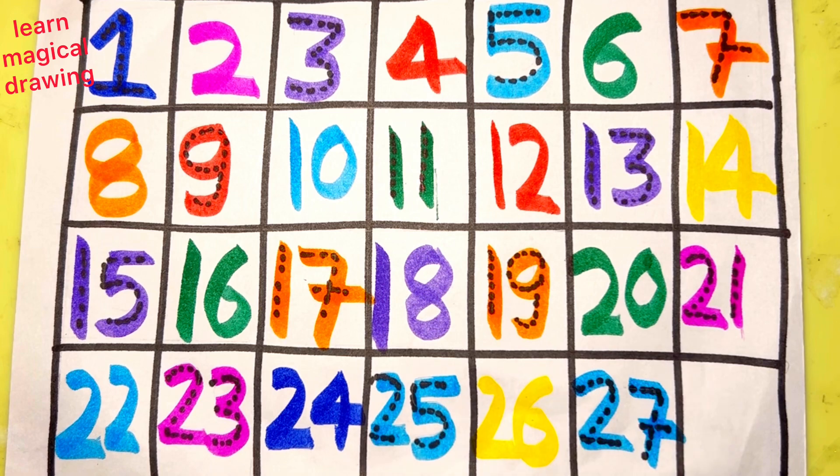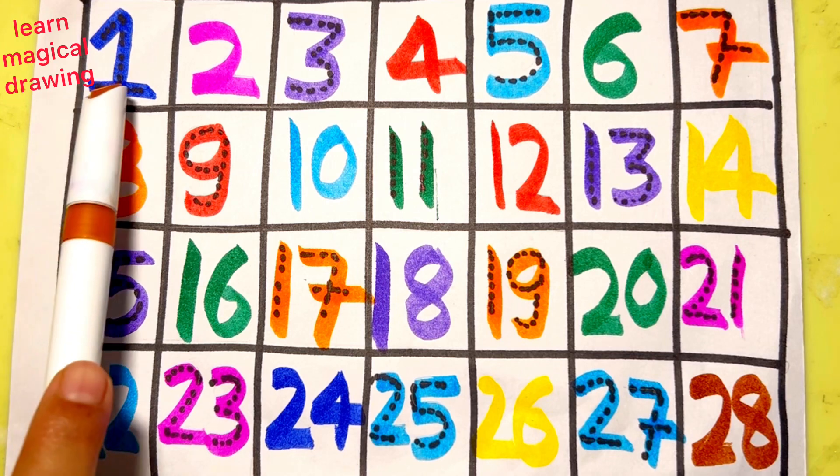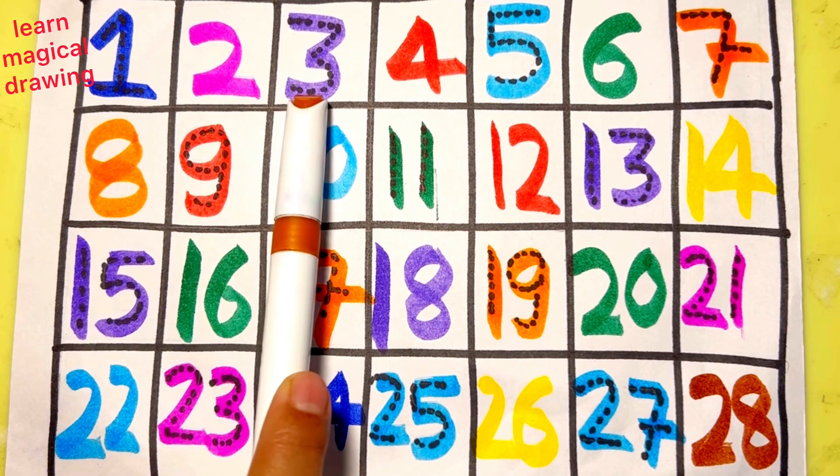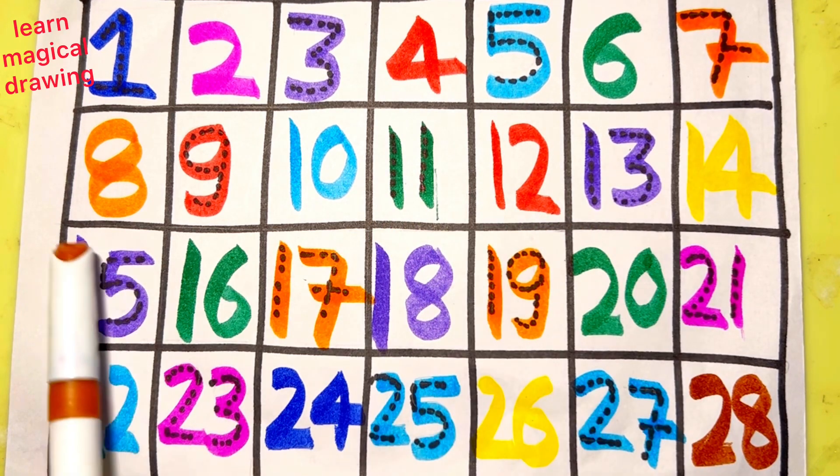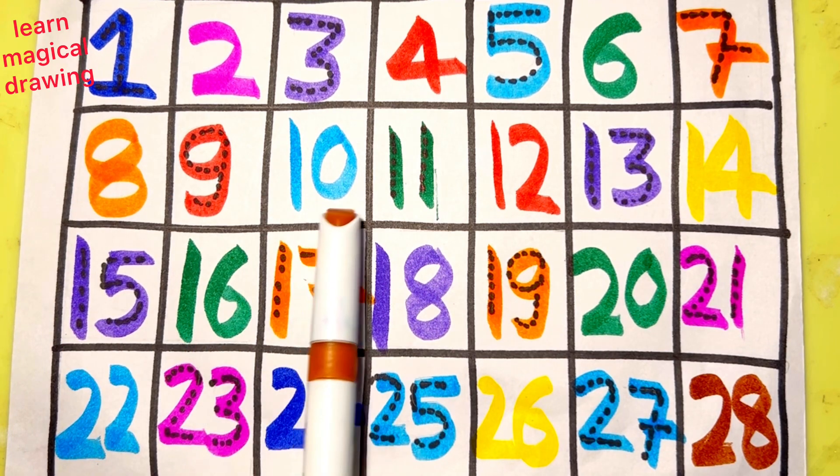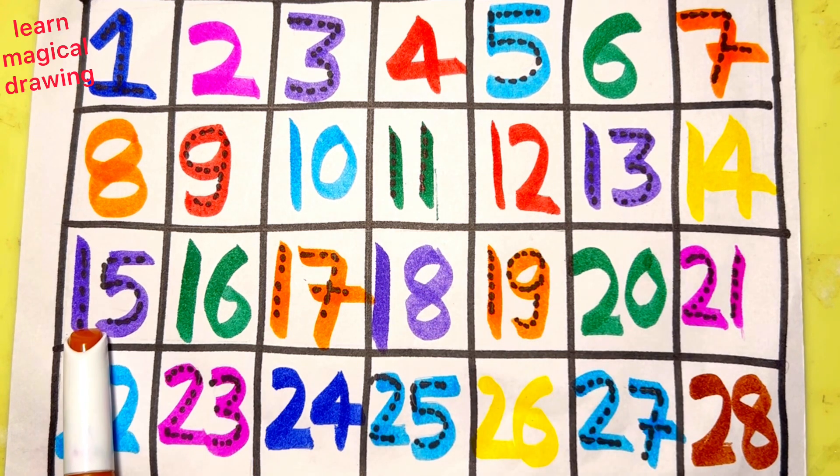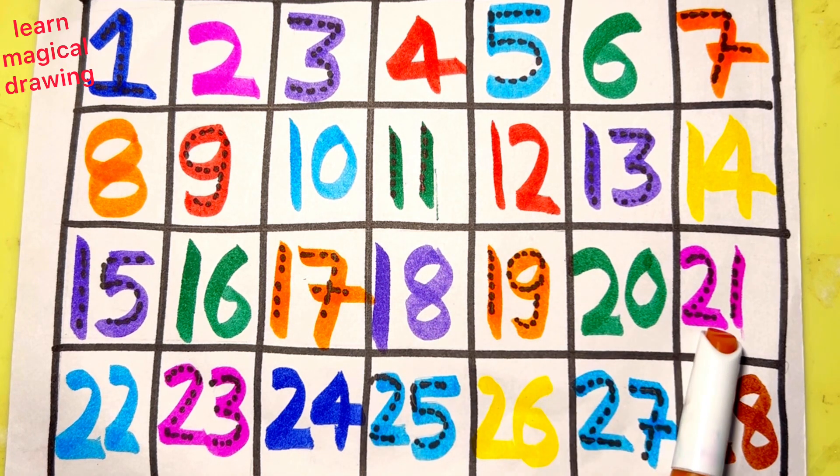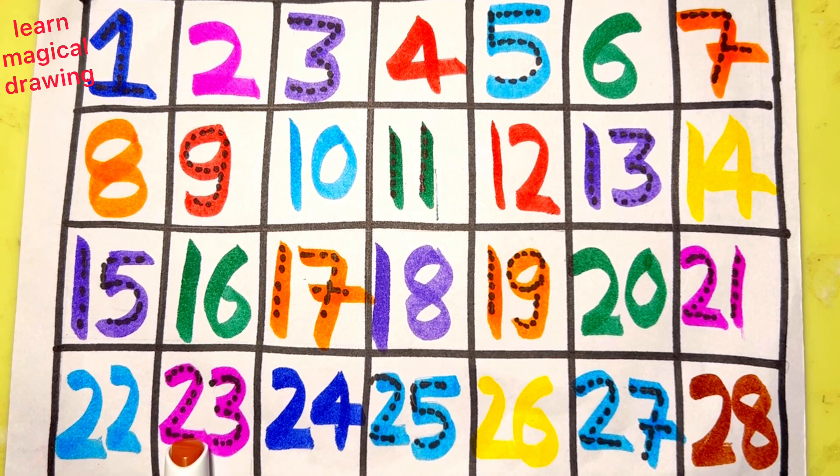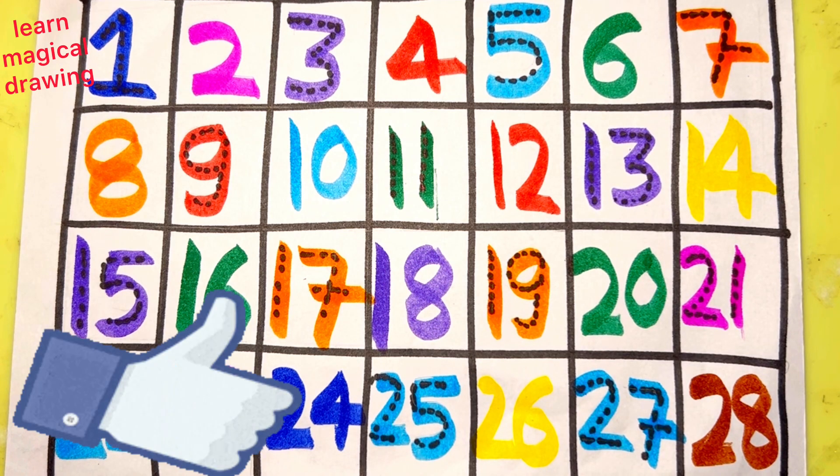2 7, 27. 2 8, 28. 1, 2, 3, 4, 5, 6, 7, 8, 9, 10, 11, 12, 13, 14, 15, 16, 17, 18, 19, 20, 21, 22, 23, 24, 25, 26, 27, 28. Like and subscribe for more videos.